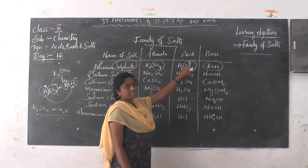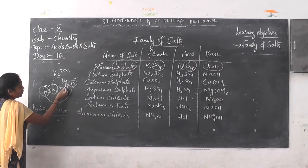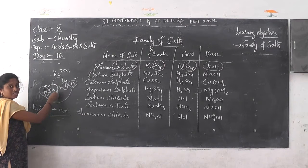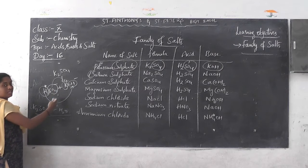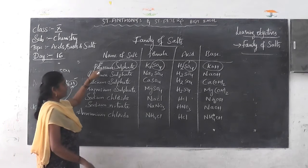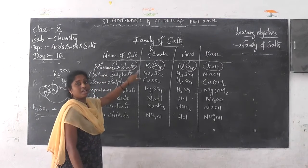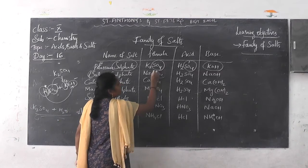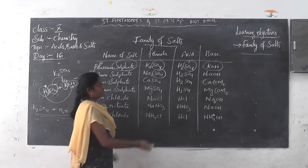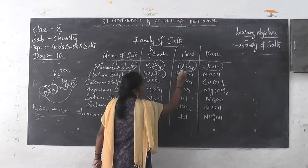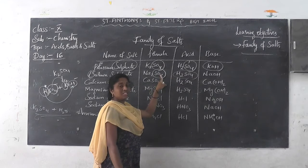Now you understand how to get the acid and the base. The combination of K and SO4 — this is the cation and the anion — gives salt and water. Next one, sodium sulphate. The formula is Na2SO4. What type of family does it belong to? The anion is sulphate, so it comes under the sulphate family. The acid is sulphuric acid.